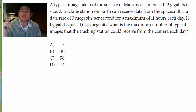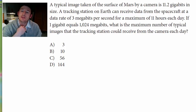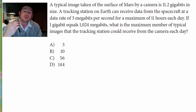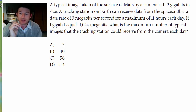It says: a typical image taken of the surface of Mars by a camera is 11.2 gigabits in size. A tracking station on Earth can receive data from a spacecraft at a rate of 3 megabits per second for a maximum of 11 hours each day. If 1 gigabit equals 1024 megabits, what is the maximum number of typical images that the tracking station could receive from the camera each day?